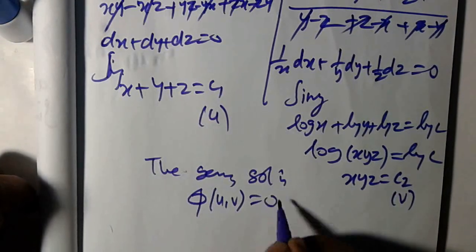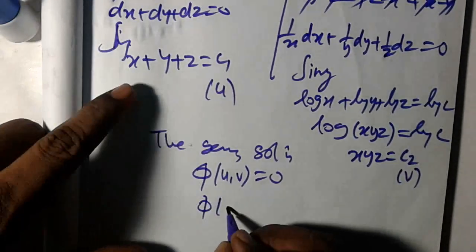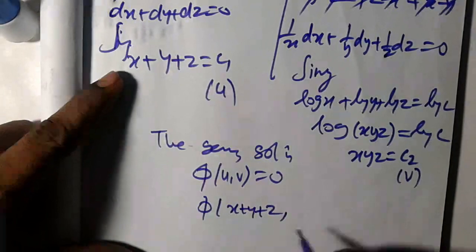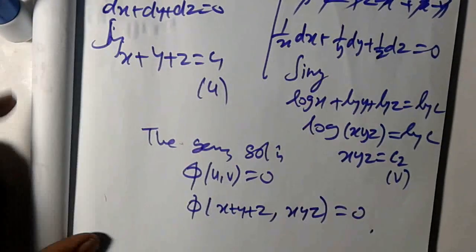φ(u,v) = 0. φ of u, where u is x plus y plus z, comma v is xyz equal to 0. That's the answer.